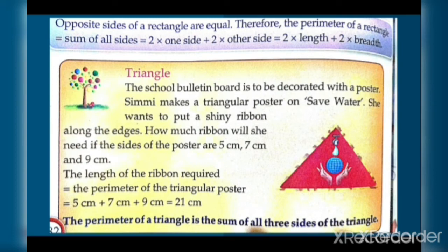The perimeter of the triangle is the sum of its sides: 5 cm plus 7 cm plus 9 cm equals 21 cm. So she will need 21 cm of ribbon along the outer edges of the triangular poster.